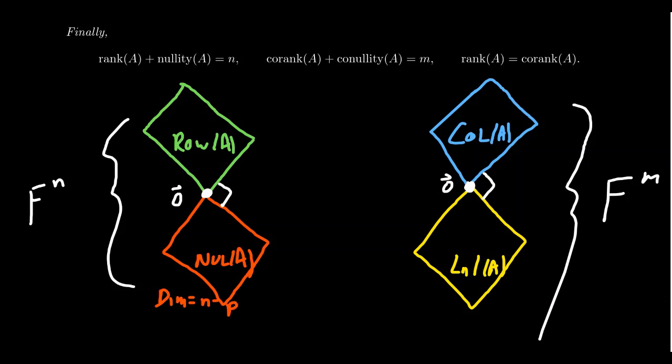If we come back to the row space, its dimension is the rank, which would be P. For the column space, its dimension is likewise the co-rank, which is equal to P. So you see the equality there. And then the dimension of the left null space, the co-nullity, this is M minus P.